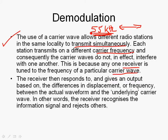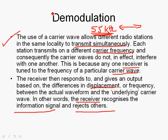Demodulation involves the process where we extract the information. The receiver responds and gives an output based on the differences in amplitude or frequency between the actual waveform and the underlying carrier wave. In other words, the receiver recognizes the information signal alone and rejects the carrier wave. The carrier wave is just that — a carrier. It carries the information from the audio signal to the receiver, and the receiver extracts that audio information and discards the carrier wave signal.